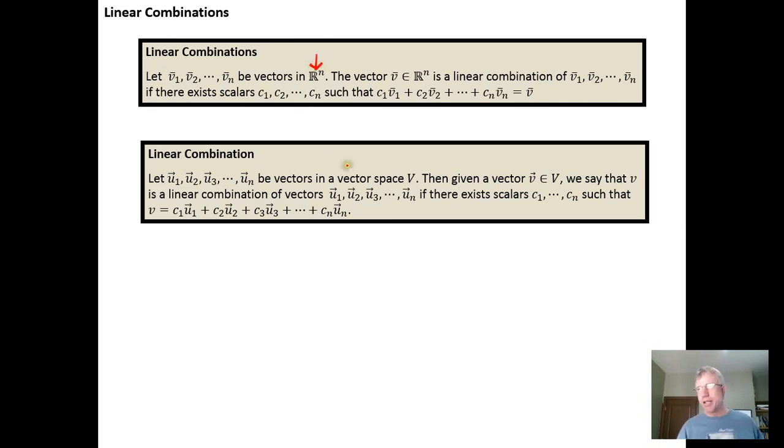Before we talked about general vector spaces, we looked at vector spaces specifically in the context of vectors that lived in R^n. Specifically we looked at examples from R^2 and R^3.